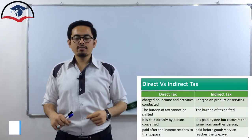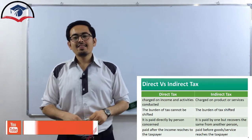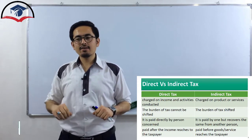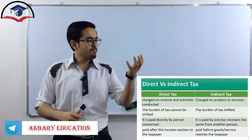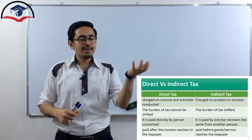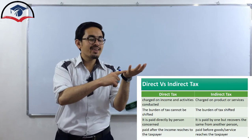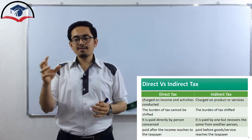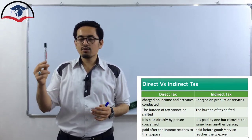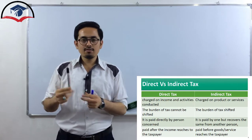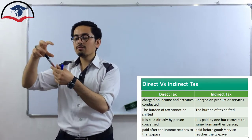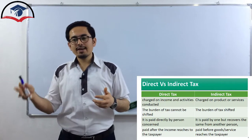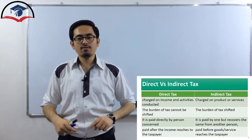Direct tax is charged on income and activities conducted, but indirect tax is charged on products or services. As an employee, direct tax is charged on your level of income at the end of the month. Indirect tax is different — it is charged on the product or services you are purchasing as a final customer. The burden of direct tax cannot be shifted, but the burden of indirect tax can be shifted.